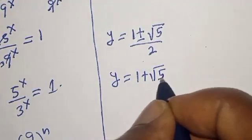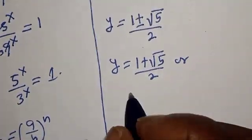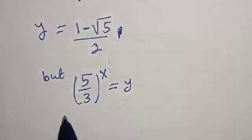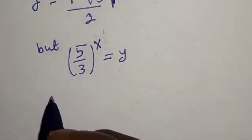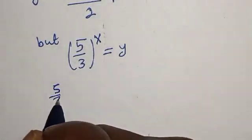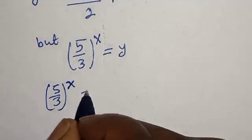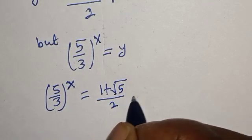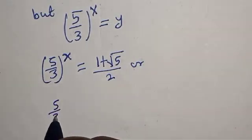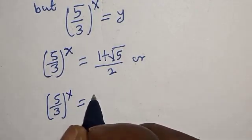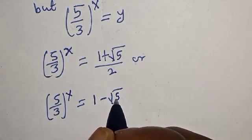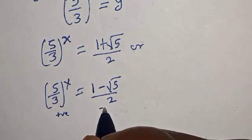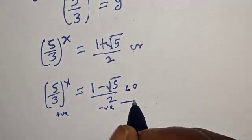Therefore y equals (1 plus root 5) over 2, or y equals (1 minus root 5) over 2. Substituting back: (5/3) to the power of s equals (1 plus root 5) over 2, or (5/3) to the power of s equals (1 minus root 5) over 2. The second solution is negative, so it is rejected because (5/3) to the power of s must be positive.